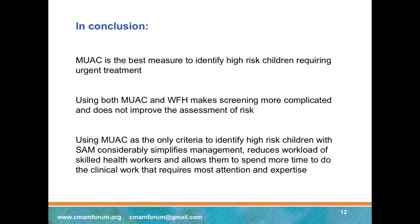In conclusion, MUAC is the best measure to identify high-risk children requiring urgent treatment. Using both MUAC and weight-for-height makes screening more complicated and does not improve risk assessment. Using MUAC as the only criterion to identify children with severe acute malnutrition considerably simplifies management, reduces the workload of skilled health workers, and allows them to spend more time on clinical work requiring the most attention and expertise.